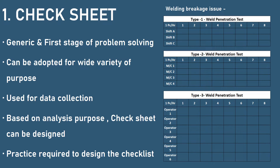Here is an example: there is a problem of welding breakage in a part — a mechanical failure. Three types of checklists are being designed. The first checklist helps record weld penetration test results of pieces produced in various shifts. The second records test reports machine-wise. The third records results operator-wise — the parts produced by each operator are tested and recorded. The checklist is very simple, but the problem solver should have knowledge to design it to get maximum input for further analysis.